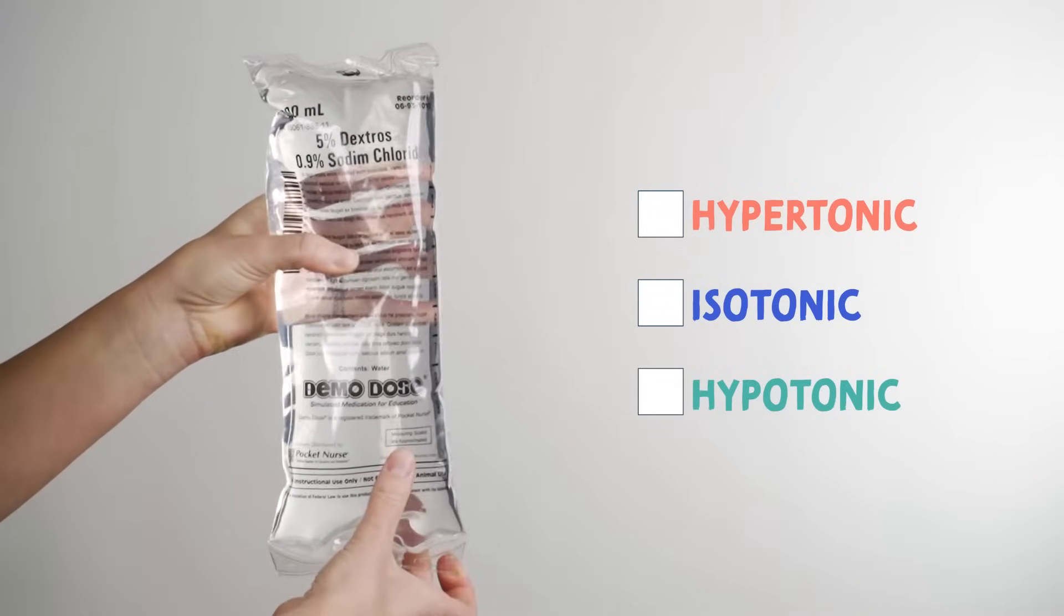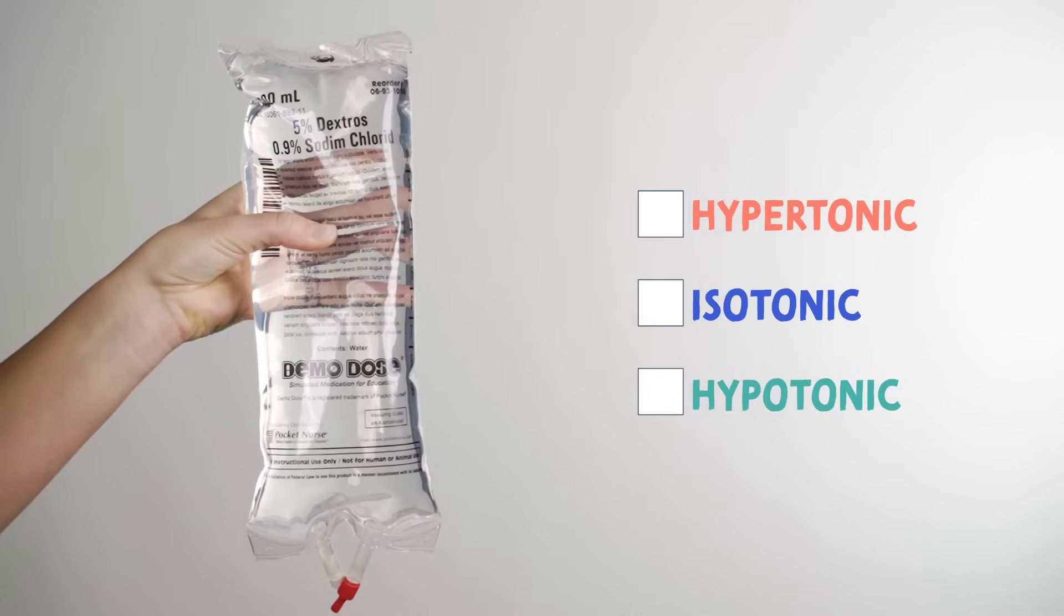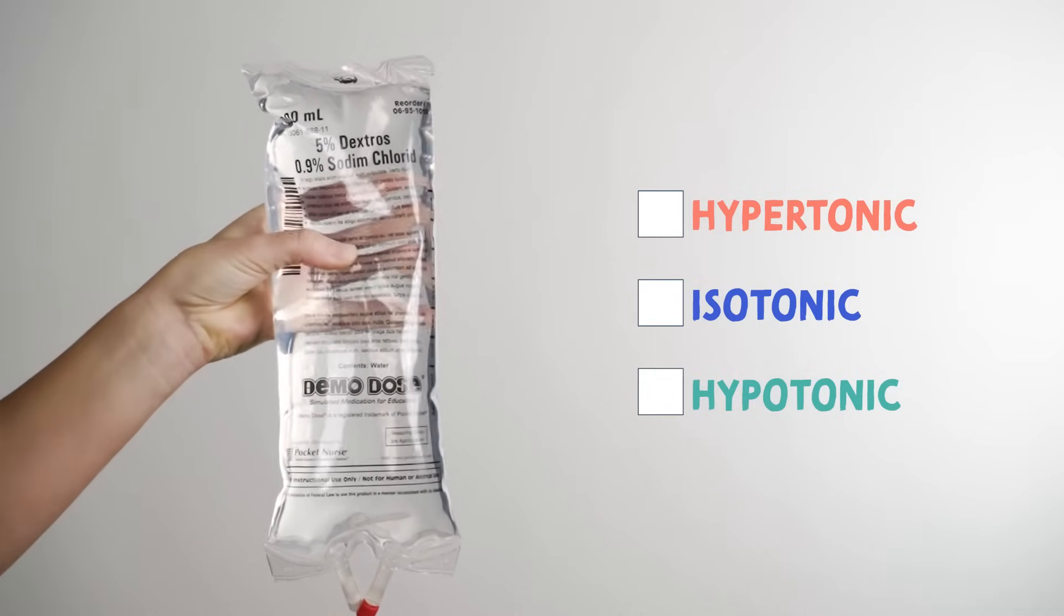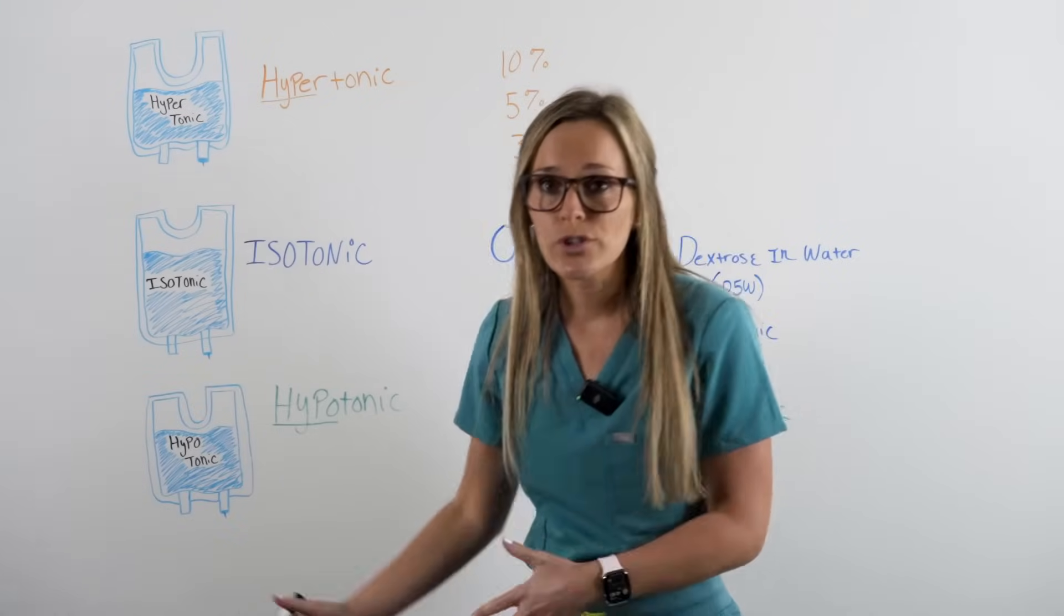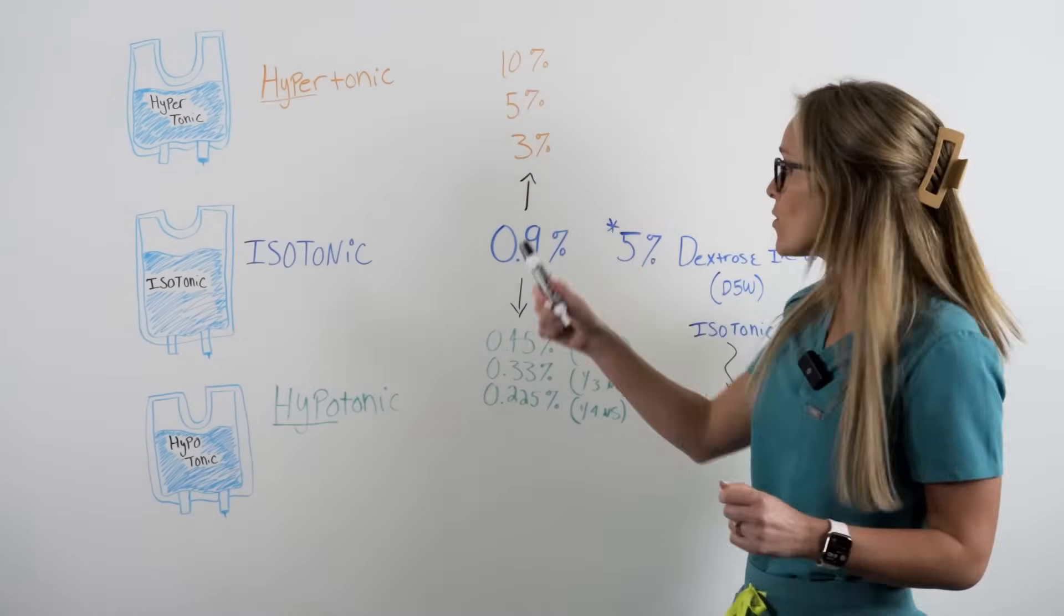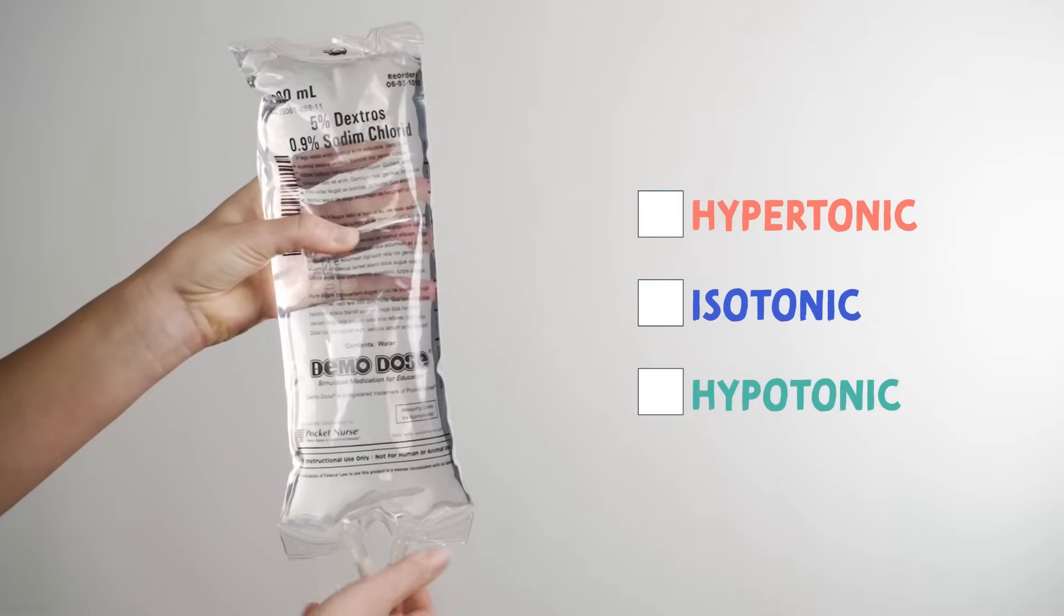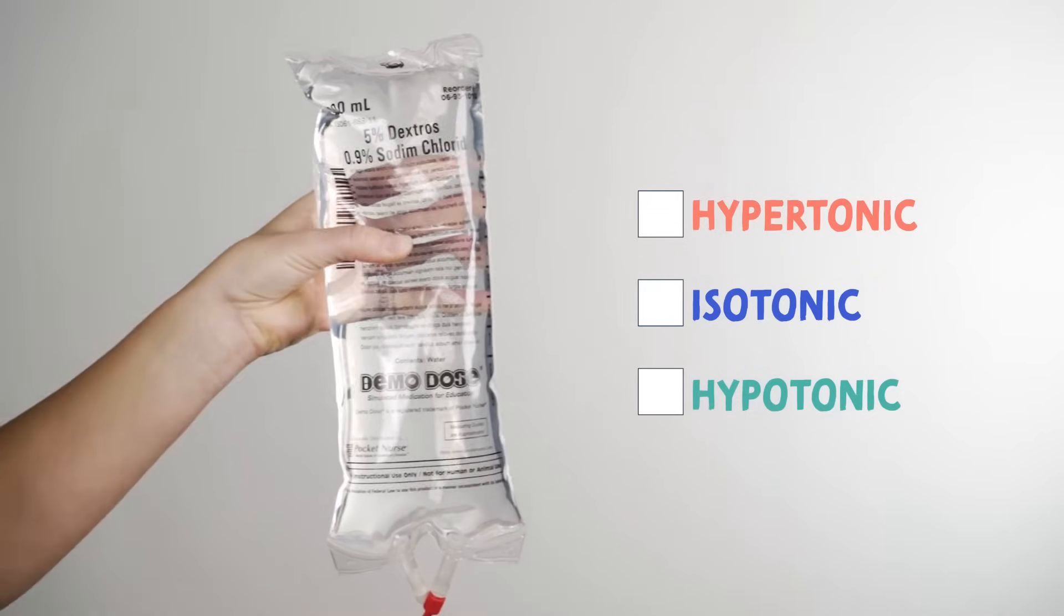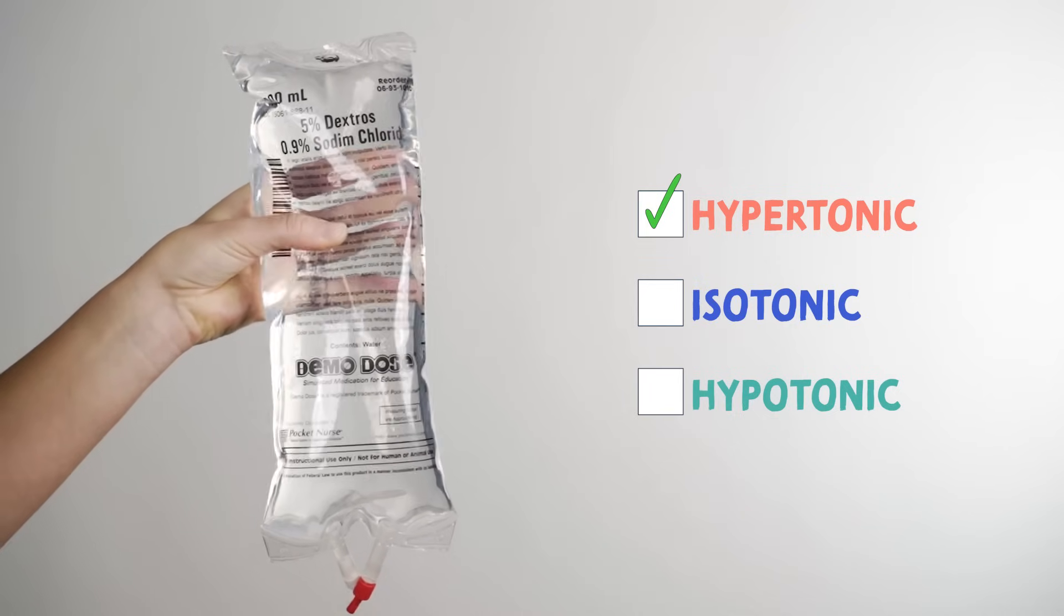How about 5% dextrose and 0.9% sodium chloride? Is this a hypertonic solution, an isotonic solution, or a hypotonic solution? Don't let this one trick you. It has 5%, but it also has 0.9% in the name as well, but it's whatever the name starts with. So it starts with 5%, making it a hypertonic solution because it's higher than our base number.